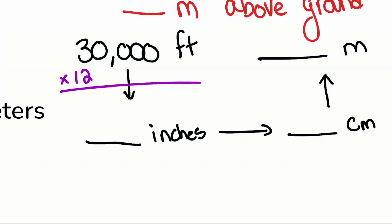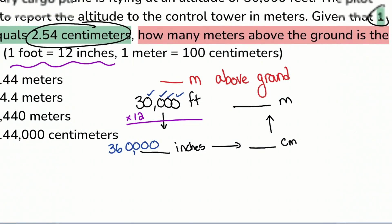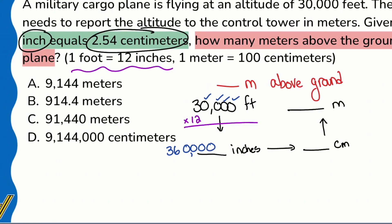Let's go ahead and do that. This is going to be pretty straightforward because 3 times 12 right there, that'll end up being 36, and then we just count all the zeros that we have left over: one, two, three, four. So 360,000 inches is what we have now.